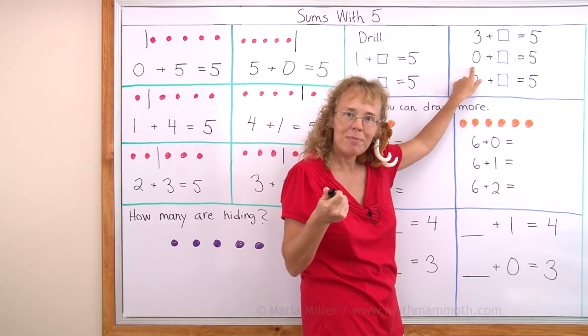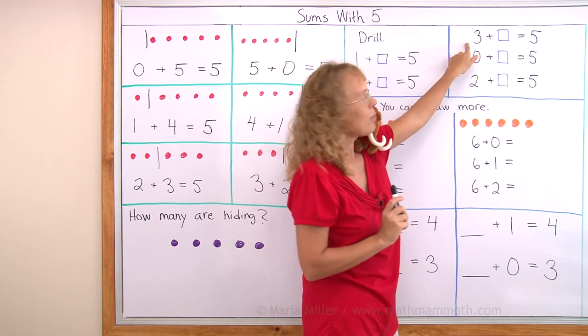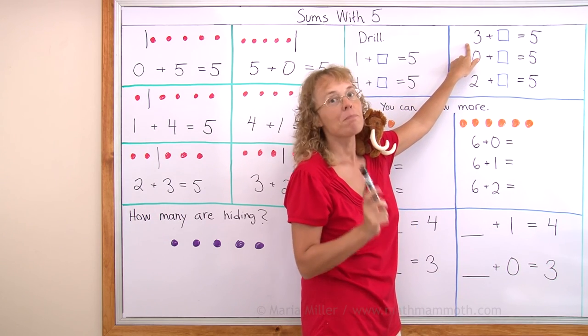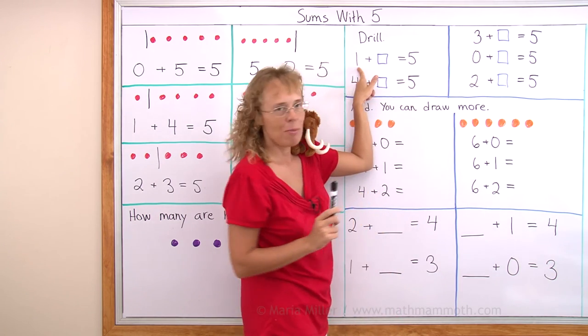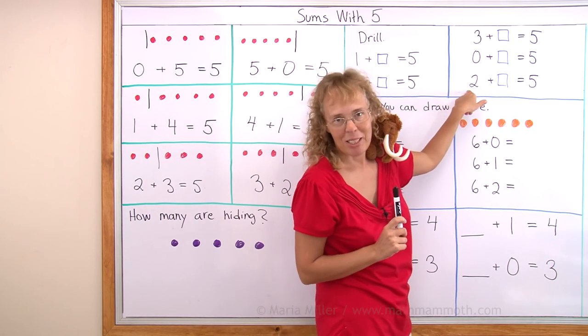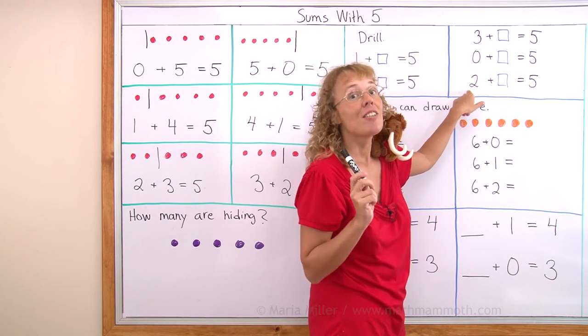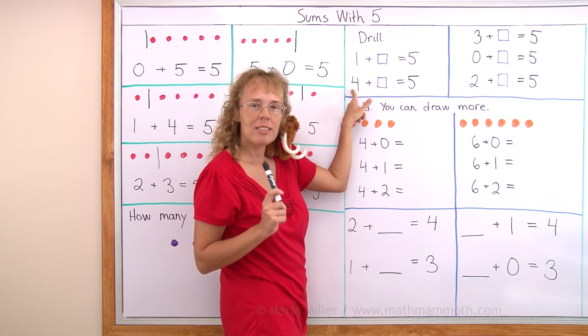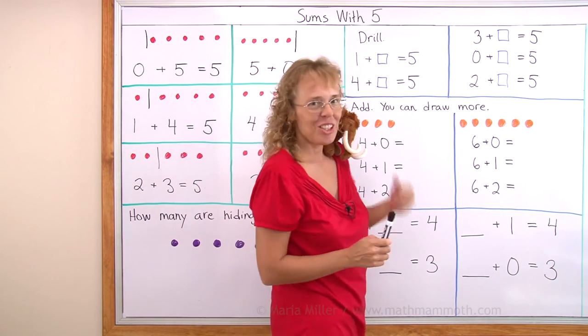Zero plus how many makes five? Five. Three plus how many makes five? Two. And one plus how many makes five? Four. Two plus how many makes five? Three. And then four plus how many makes five? One. Good job.